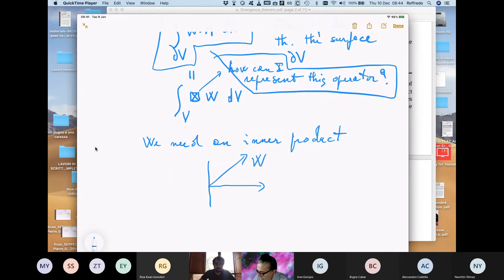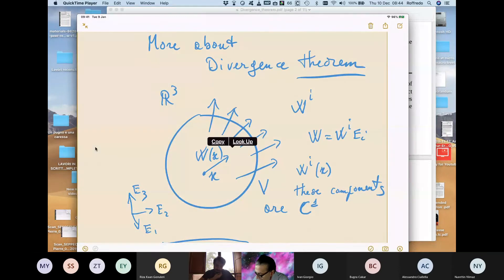If you have this velocity and if this is the normal, and if you have a mass which is flowing in this way, so following, having the velocity W, the standard reasoning which is done is the following.